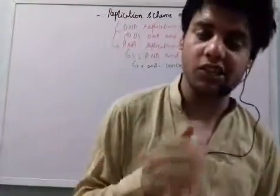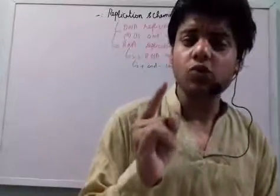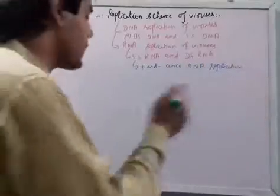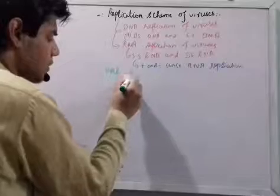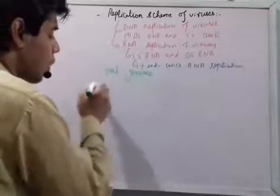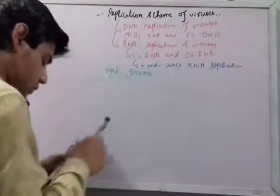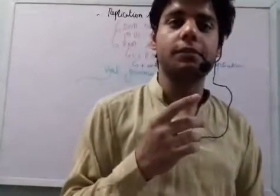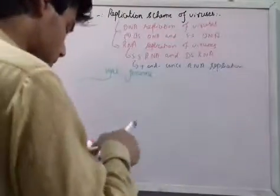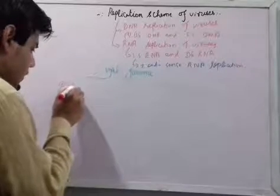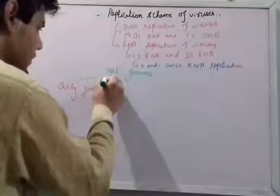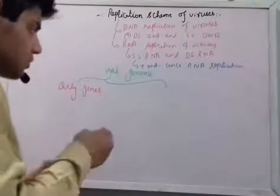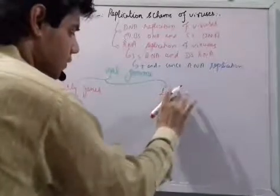First we will talk about double-stranded and single-stranded DNA replication viruses. To understand DNA replication we need to understand the genes of the viruses — the viral genome. Viruses actually have two types of genes: the first type is called early genes, and the second type is called late genes.